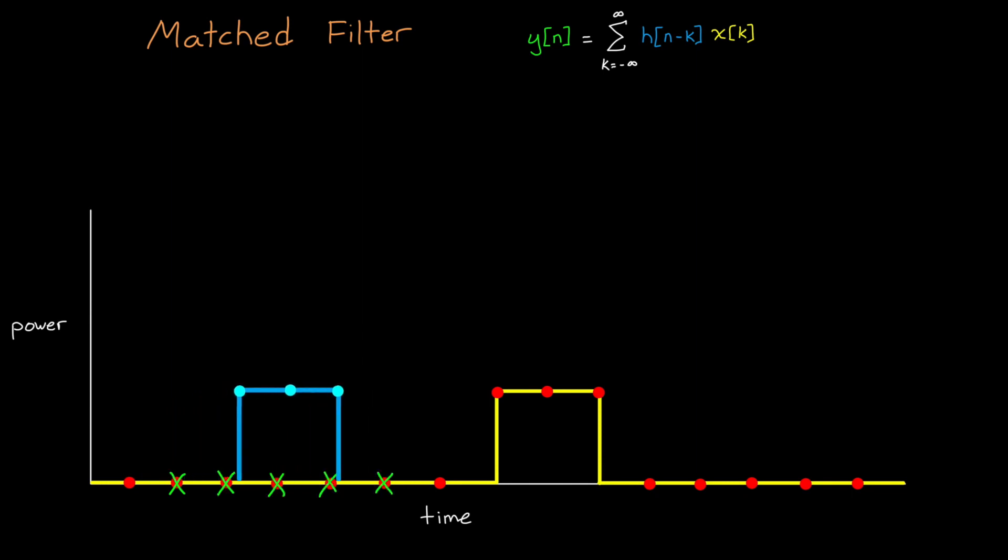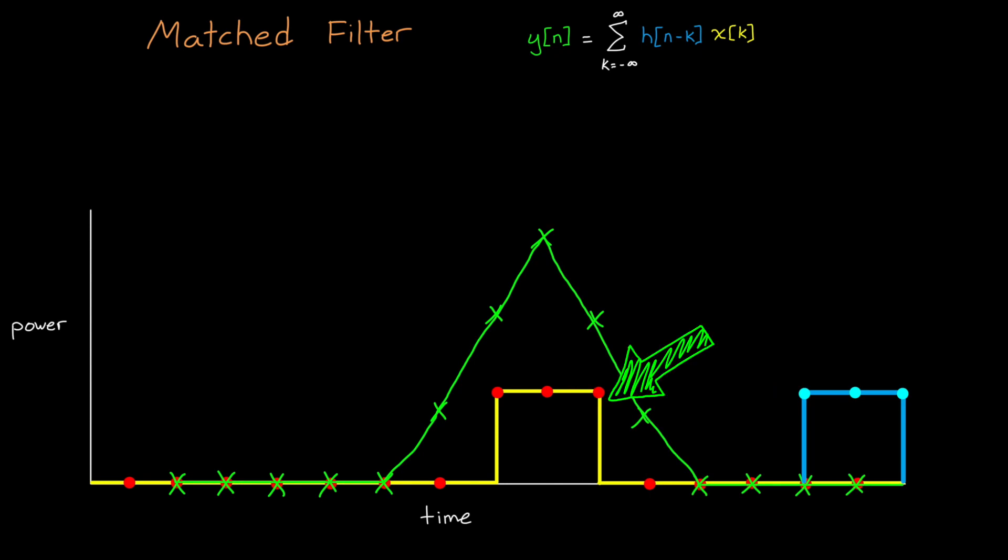Until we've swept across the entire received signal. This has the effect of amplifying the signal and making the signal more narrow by turning that wide rectangle into a single peaked triangle.